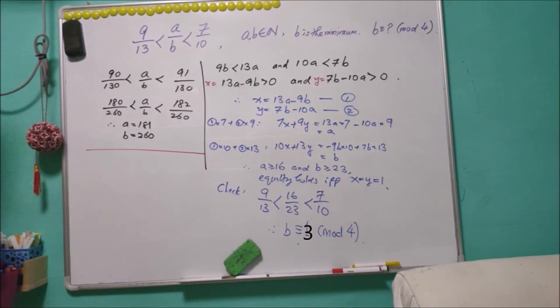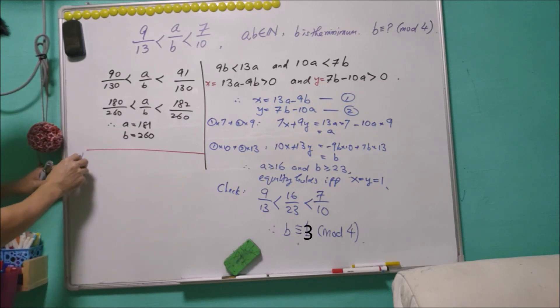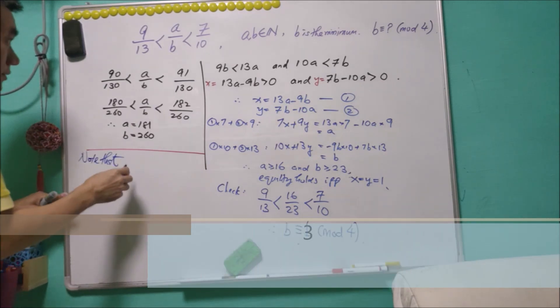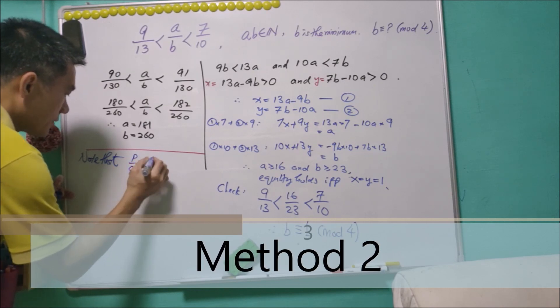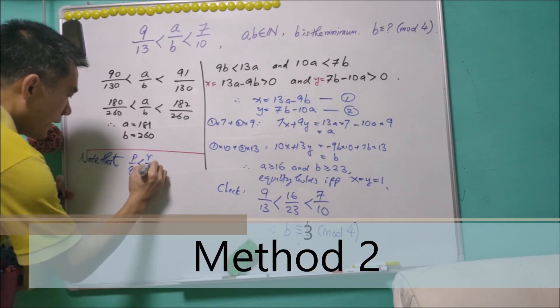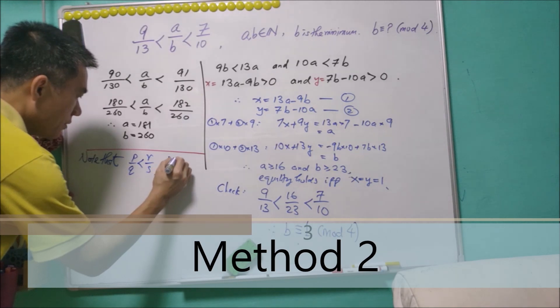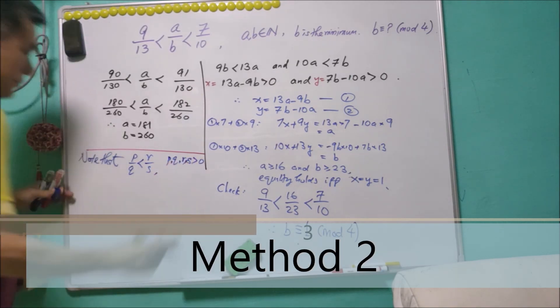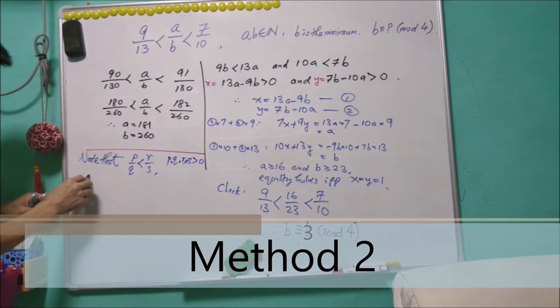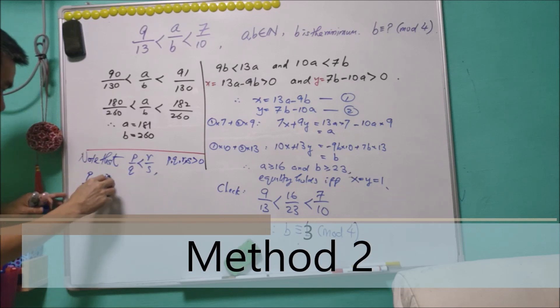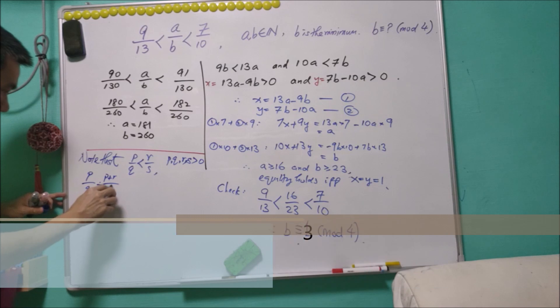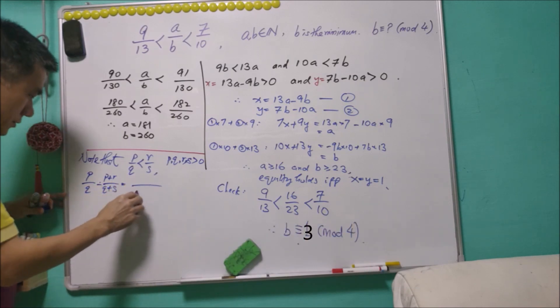For another method that we are going to do here, we will see there's an interesting result. Let's say p/q < r/s where p, q, r, s are positive.